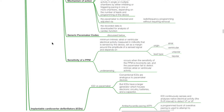Under-sensing occurs when the sensitivity of the permanent pacemaker is incorrectly set and the pacemaker fails to detect intrinsic atrial or ventricular activity.